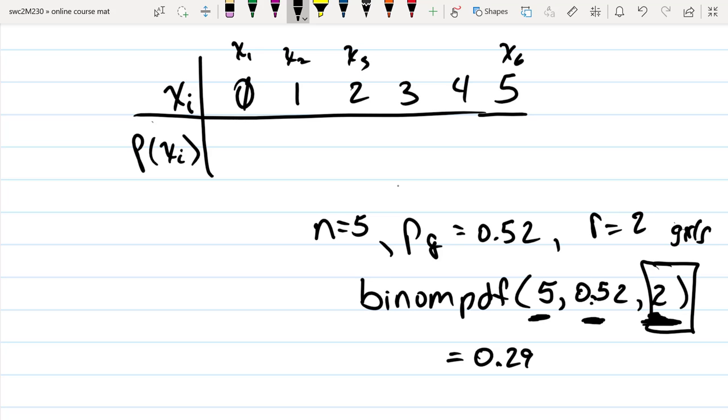If you do that, or if you just repeatedly use binomial pdf with values 0, 1, 2, 3, 4, and 5, what you'll see is that you get values...